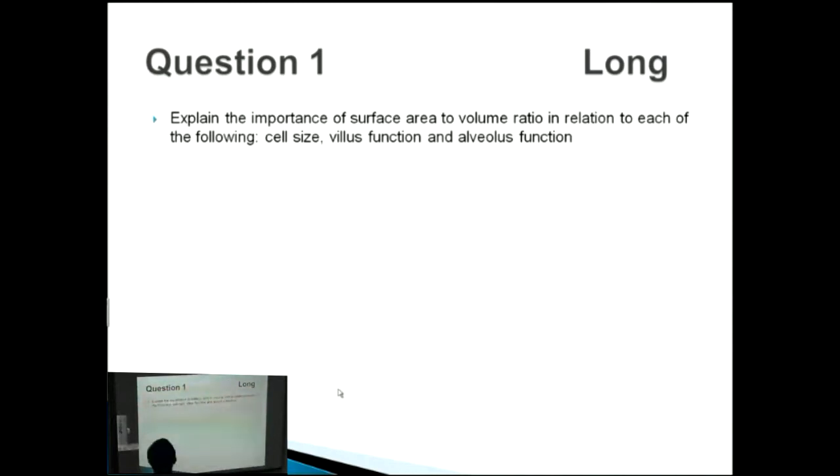Let's look at this short answer question: Explain the importance of surface area to volume ratio in relation to each of the following: cell size, villus function, and alveolus function. When approaching these questions, we know this is a long question with about seven to nine marks allocated, so you want to write at least seven to nine points.